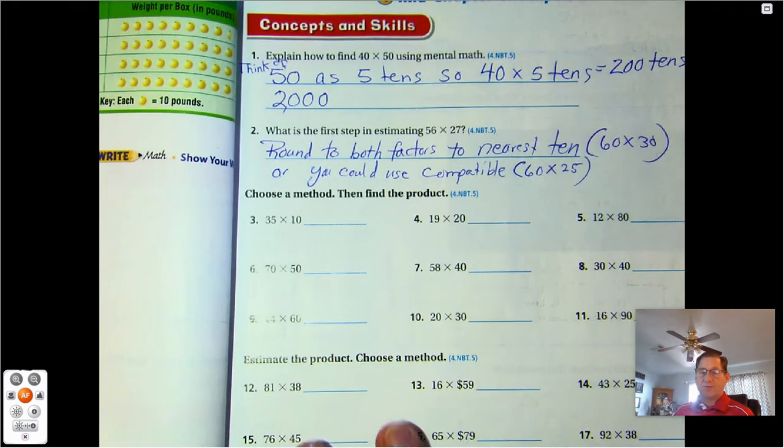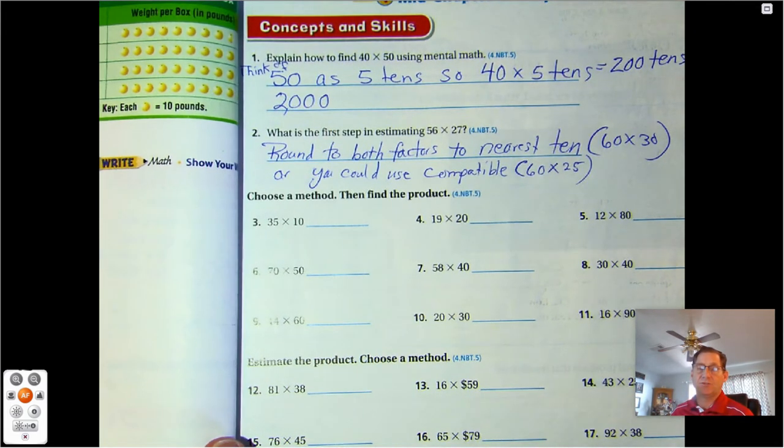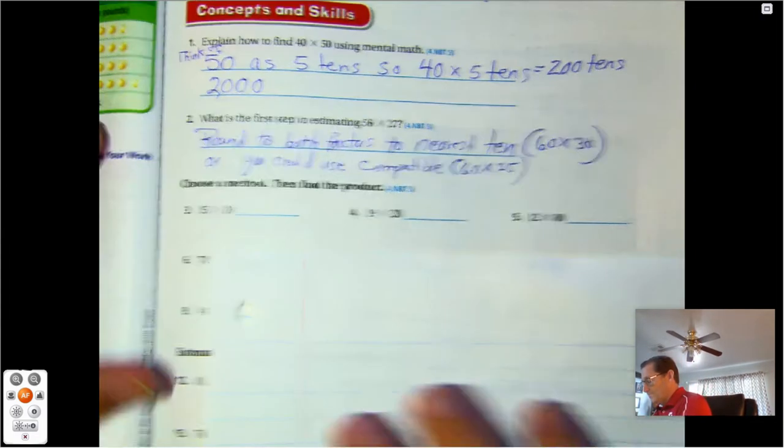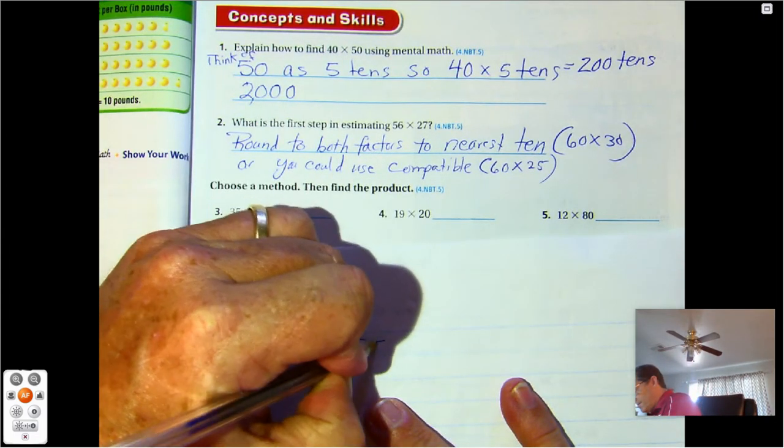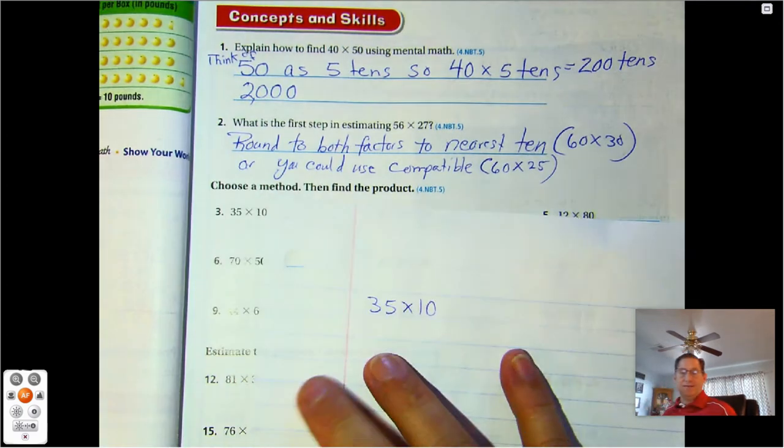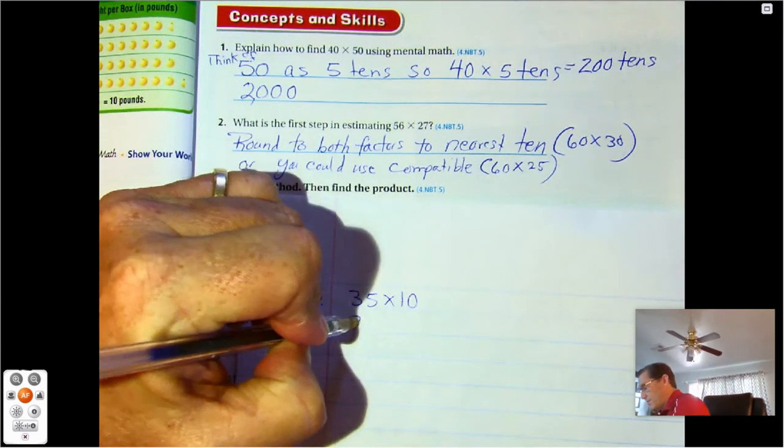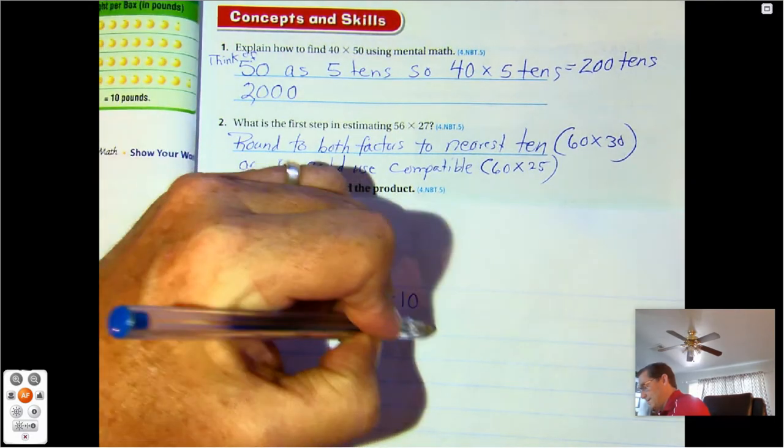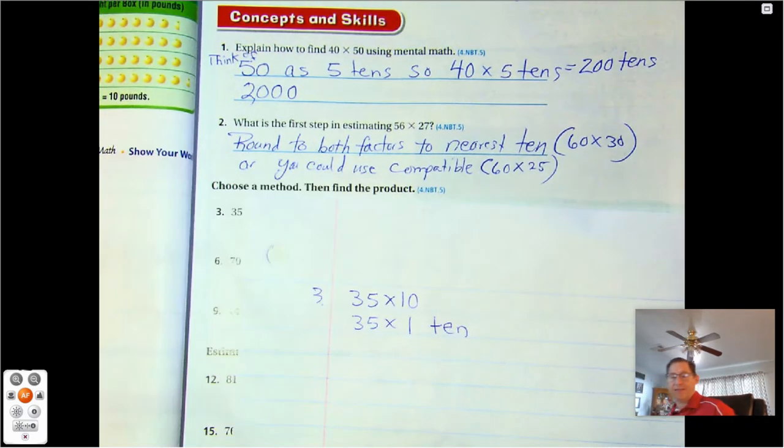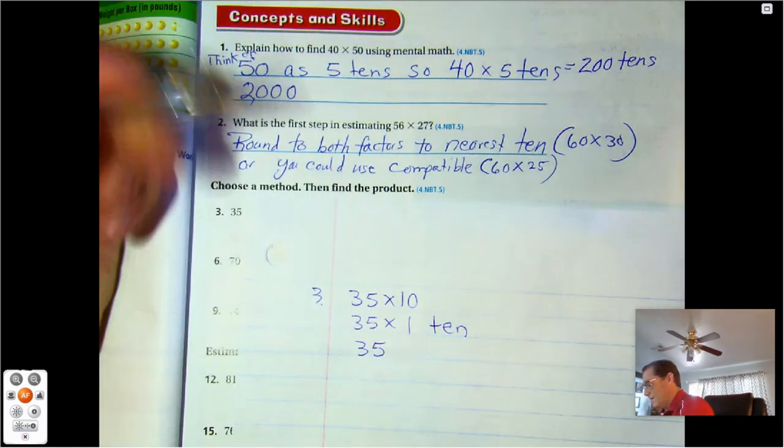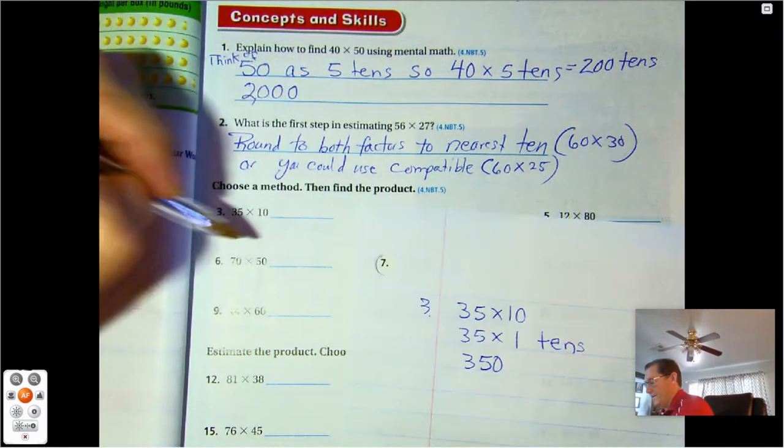Number three. 35 times 10. Choose a method and then find the product. Well I'm just going to say that that's 35 times 1 ten. 35 times 1 is 35. So 35 tens, 350.